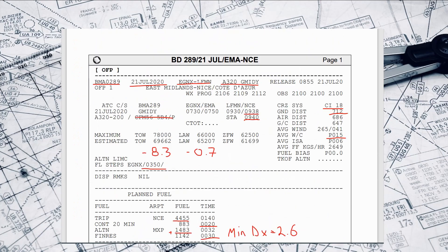We can head back up to the top of the flight plan now and start going through everything else in detail. I've crossed out the engine variant there, as the British Midland Airbuses used to use the IAE engine variant, but SimBrief gave us the CFM56 variant, so there might be a slight discrepancy in the fuel planning given the different engine types. You'll notice the scheduled time of arrival is 0940 and the estimated time of arrival is 0938 — just a two-minute margin. All we can really do to try and improve things is try to push back a little early from East Midlands, or request direct routings on our way over to Nice to try and cut down on the flight time.